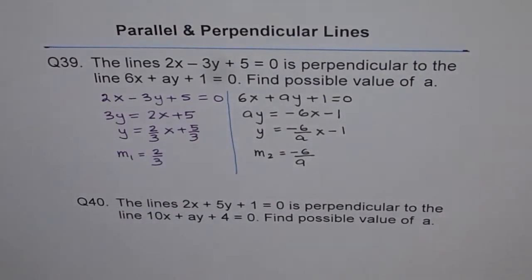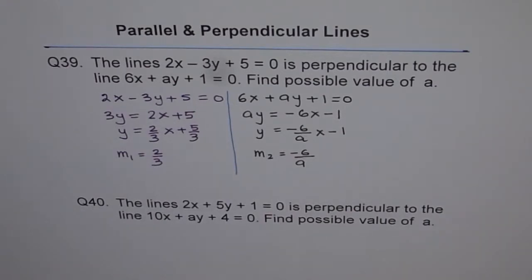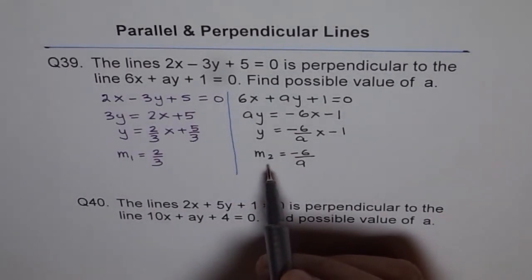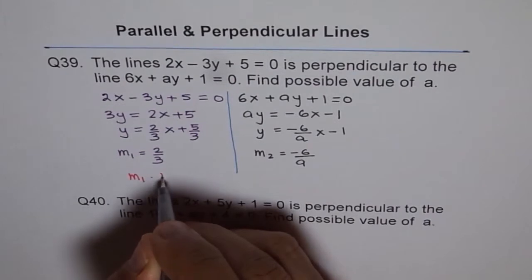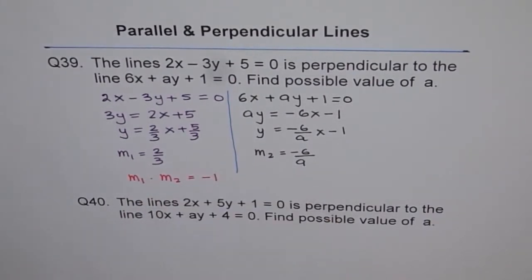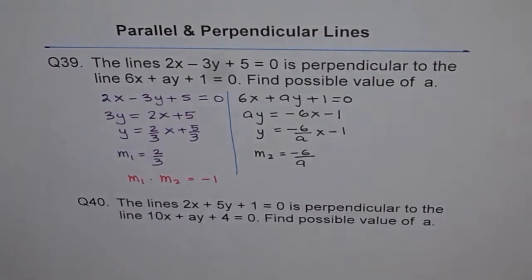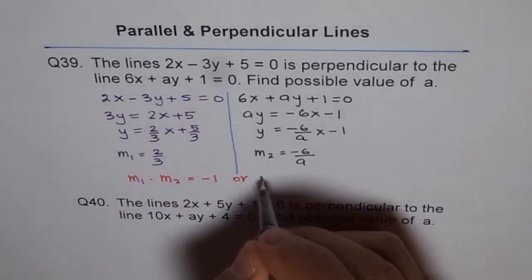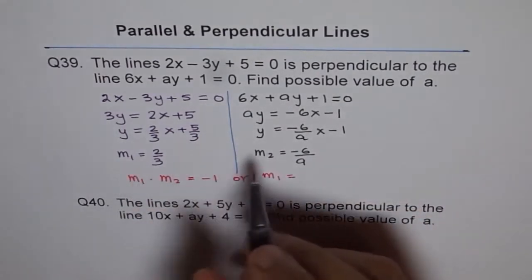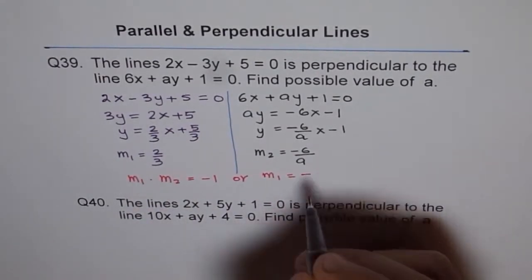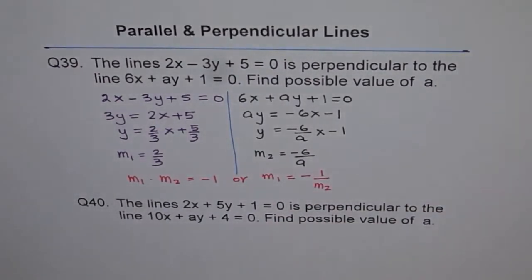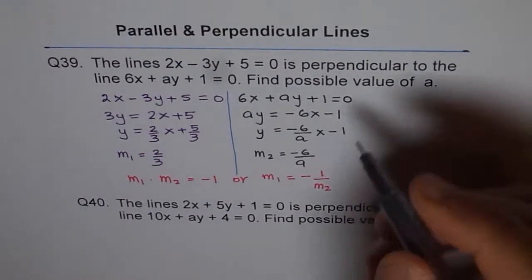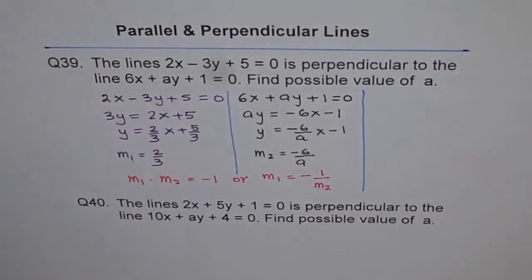Now if these lines are perpendicular, then what do you expect? If these lines are perpendicular, then the product of slope should be minus 1. That means m1 times m2 should give me minus 1. Or, m1 is equal to negative reciprocal of m2, that means negative of 1 over m2. This means this also. We can adopt any of these methods to figure out what is the value of a.